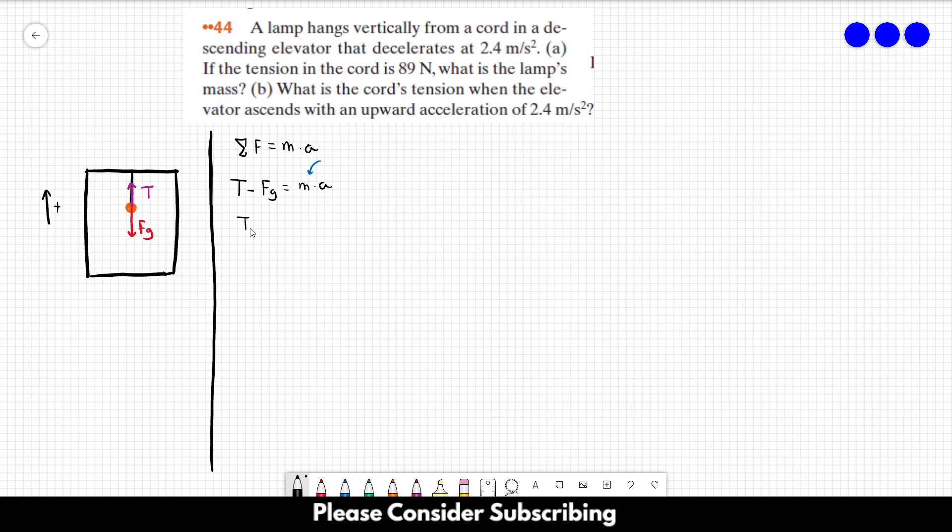However, FG contains the mass as well because the force of gravity is equal to mass times gravity. So, this is tension minus mass times gravity is equal to mass times acceleration. So, we want to find the mass, so we are going to send this term to the other side. So, the tension is equal to ma plus mg. So, M which multiplies A plus G. So, the mass of the lamp is equal to T over A plus G.